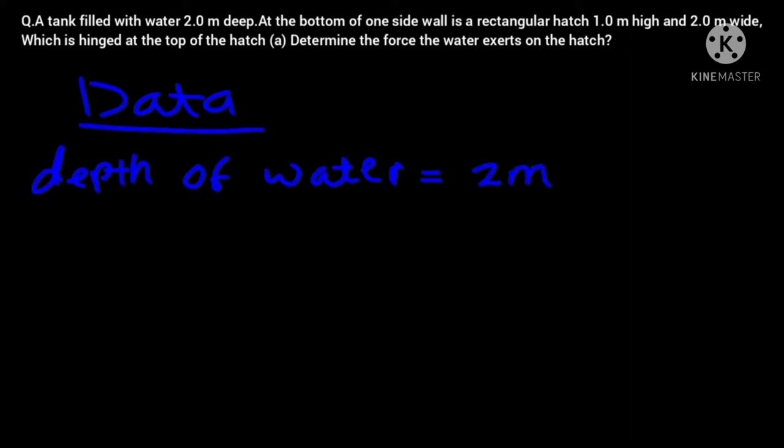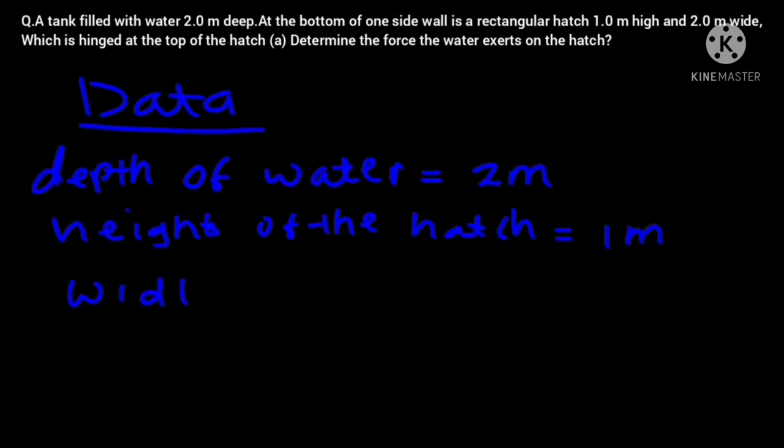So the first thing that we are going to do is to collect the data that we have. The data that we have: depth of water is equal to 2 meters, height of the hatch is equal to 1 meter, so the depth of the water is 2 meters and the height of the hatch is equal to 1 meter.